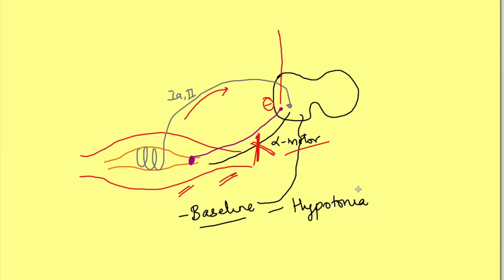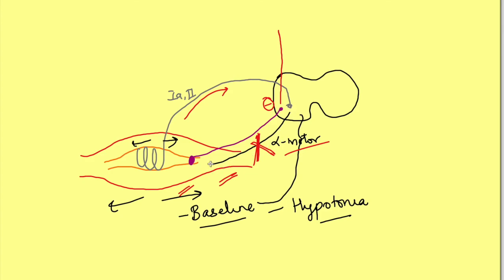Similarly, in deep tendon reflexes — even if we stretch the muscle by hitting with a hammer, the intrafusal fibers will stretch and action potentials will be generated and travel to the spinal cord, but the alpha motor neuron is inactive. So it will not lead to contraction of the muscle — the reflex will not work — leading to lost deep tendon reflexes.